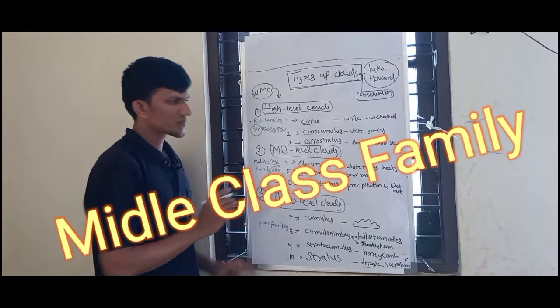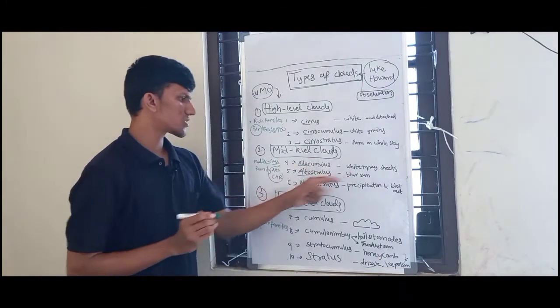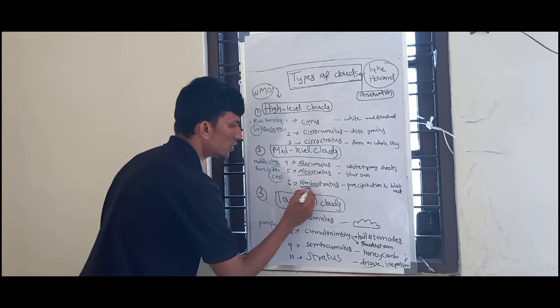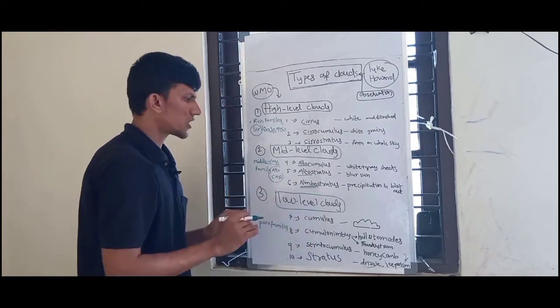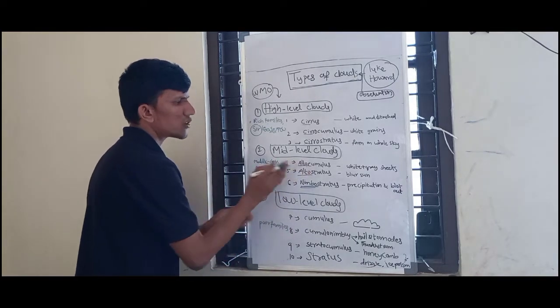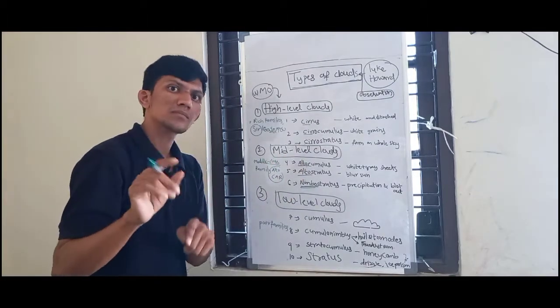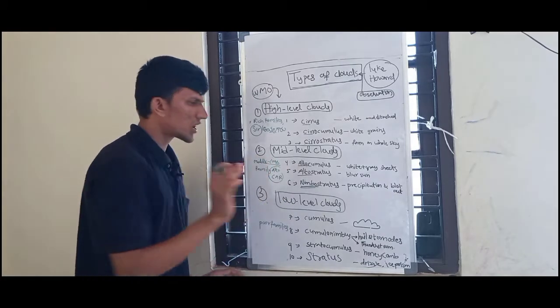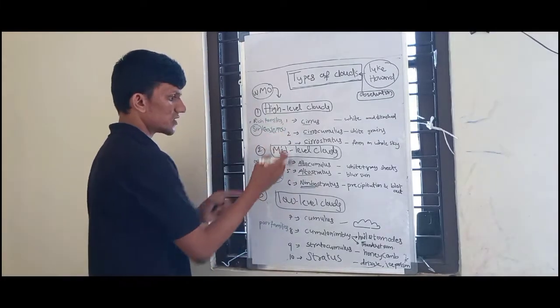Middle class family - altocumulus, altostratus, nimbostratus. These are different but you also have to know these. So this is the alto car representing altocumulus and altostratus. These two are easy.